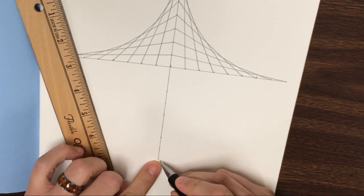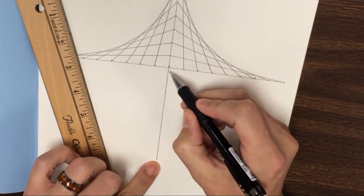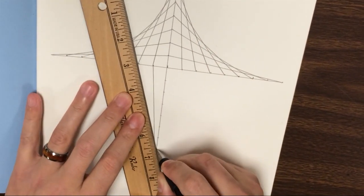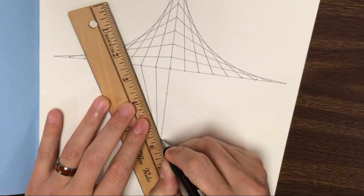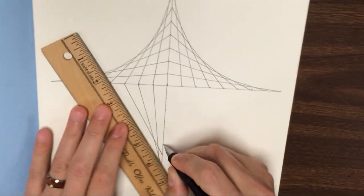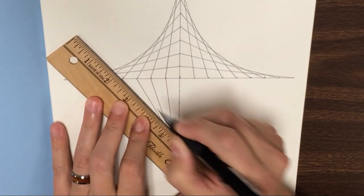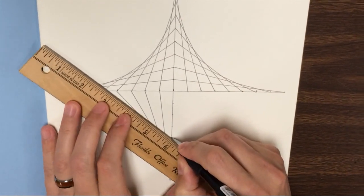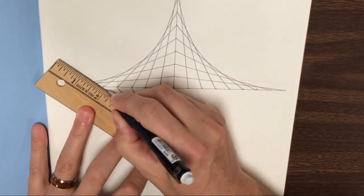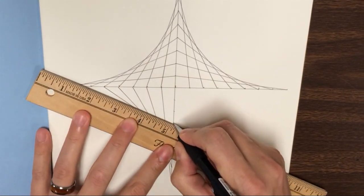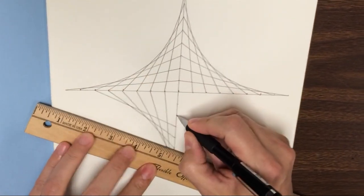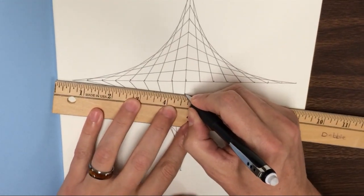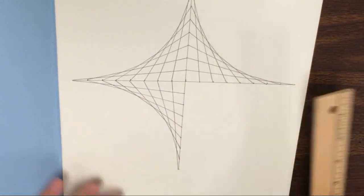Again, you start at the very top, go to your mark closest to your center. Be very careful with your placement, try to make sure that your lines intersect at the right point. There's one side left.